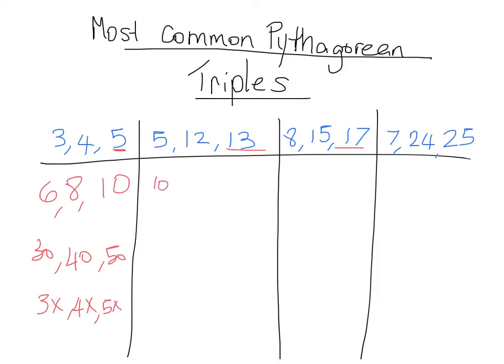Alright, and the same is true for the others. So 10, 24, 26 multiplying by 2, or multiplying by 10 we have 50, 120, 130, that's a humongous triangle. Or in general 5x, 12x and 13x. So you get the point. This is not a video about multiplying so I'm going to stop there for this part. Just remember that multiples of triples are also triples.